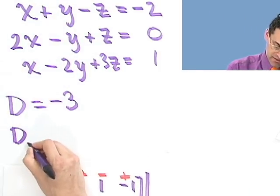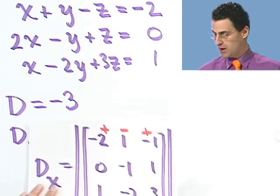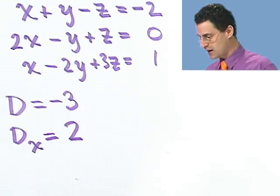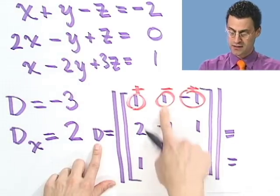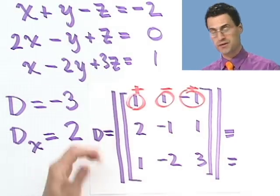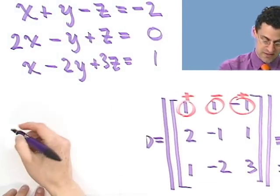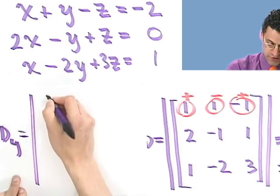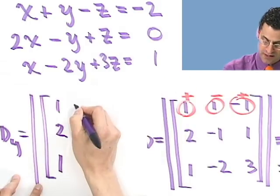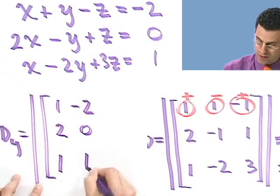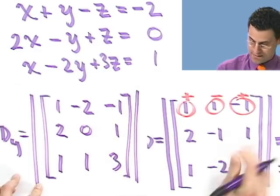Now, you know, I admit that these are taking a teeny bit of time, but they're not hard at all once you get the hang of it. Now, let's find d sub y. So how do I find d sub y? Well, I come back to d and I get rid of the y column and replace it by these and compute that determinant. No big deal. So d sub y equals determinant of, I keep the x column, but now the y column gets replaced by this negative 2, 0, 1. And then the z column remains the same. And now I have to compute that.